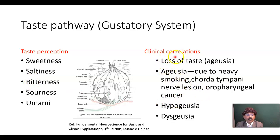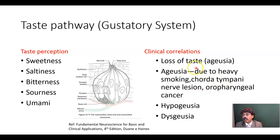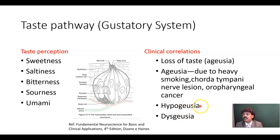We have some clinical correlations. Loss of taste sensation is called ageusia. Causes include heavy smoking, chorda tympani nerve injury (a branch of the facial nerve) — if damaged, there will be no taste sensation and the person will have ageusia. In some cases of oropharyngeal cancer or radiation, we may also have loss of taste. Hypogeusia — decreased sense of taste — may happen as age advances, as the number of taste buds decreases. In certain diseases like diabetes mellitus, taste buds may be less sensitive to certain foods.